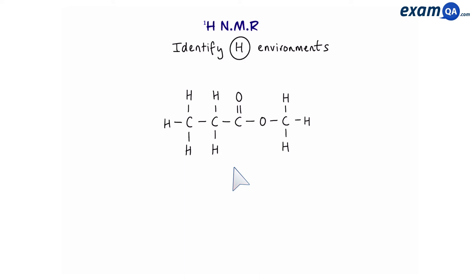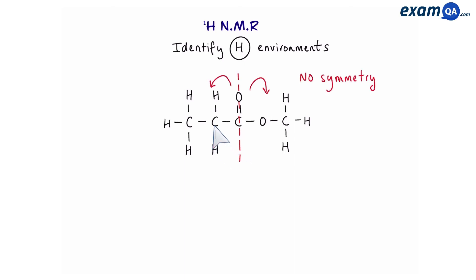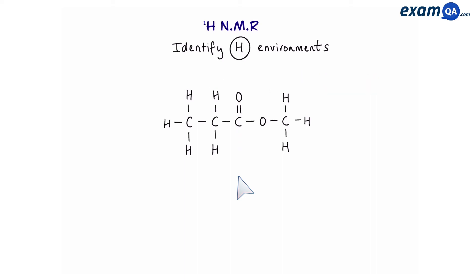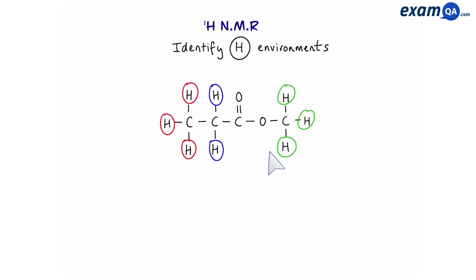Let's do one final example. Whenever you have a molecule, the first thing you want to do is see if there's a line of symmetry anywhere. Here there's clearly no line of symmetry, though some people might think there's one down the middle. If you look at both sides of that line, you can see two different groups of atoms, meaning there's no line of symmetry. If you're in doubt, put a line wherever you think there's symmetry and look on both sides. Since there's no symmetry here, we label the environments from the left: these three make one environment, these two make another, and these three hydrogens make the final environment — three environments in total.